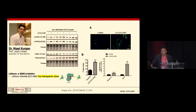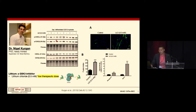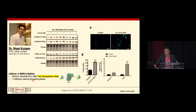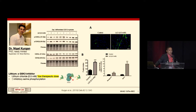Dr. Nigel Kurgan, a newly minted PhD who just defended two weeks ago, completed a side project where he treated C2C12 cells for three days during differentiation with lithium — a known GSK-3 inhibitor. We used lithium chloride at 0.5 millimolar, a low therapeutic dose commonly used to treat bipolar disorder. We found an increase in inhibitory serine phosphorylation: serine 21 for GSK-3-alpha and serine 9 for GSK-3-beta. This serine phosphorylation prevents GSK-3 from recognizing and binding its substrate — one of the ways lithium inhibits GSK-3.